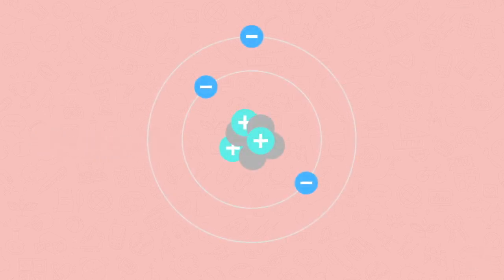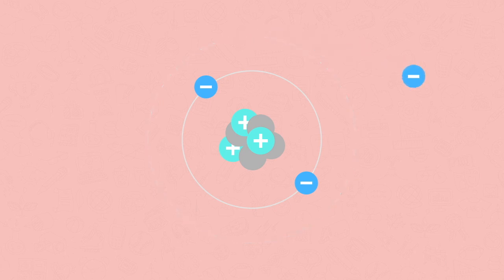In this nugget we're going to look at isotopes. Here is an atom. It is the number of protons in an atom that tells us which element this atom is. You can change the number of electrons, you can even change the number of neutrons, but atoms from the same element always have the same number of protons.